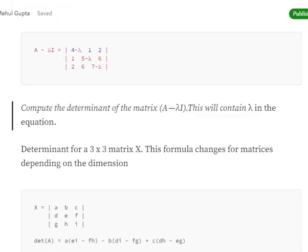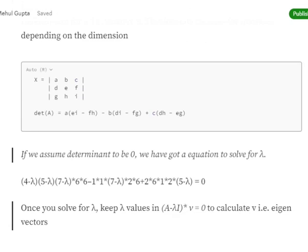Now we will be calculating the determinant of matrix A minus lambda I. Determinant has a different formula for different dimensions of matrix. For a 3 by 3 matrix, this is the formula that we follow: A times EI minus FH minus B times DI minus FG plus C times DH minus EG.